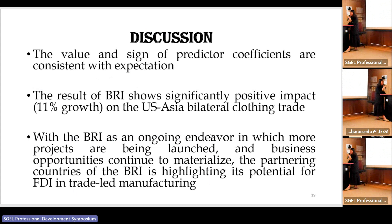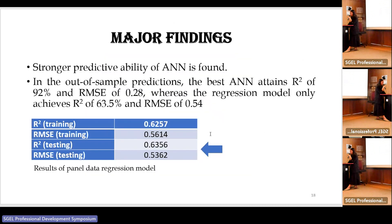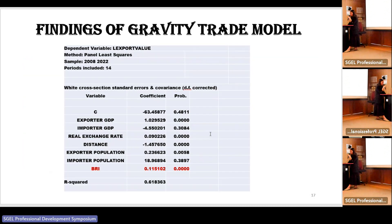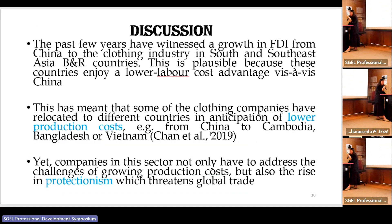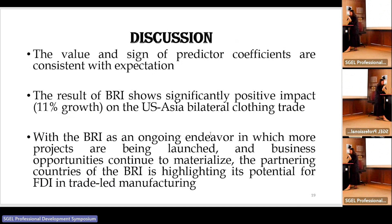The value and sign of the estimated coefficients are consistent with expectations, whether using panel data estimation or ANN. The exporter GDP has a positive impact, importer GDP has a negative impact, real exchange rate has a positive impact, and distance has a negative impact — meaning the farther the distance, the lower the export value. Exporter and importer population both have a positive impact on apparel imports. BRI also has a significantly positive impact on apparel trade.